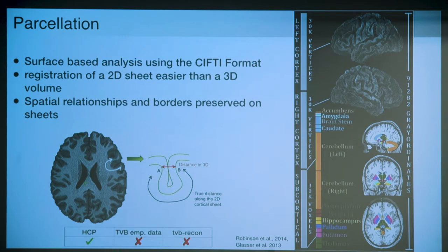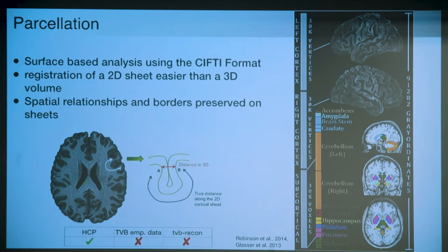This is why the Human Connectome Project does most of their processing on cortical sheets. In 3D, the Euclidean distance between two areas can be very short while the true geodesic distance on the cortical surface is much longer. Representing the cortex as a sheet lets you unravel the true distance between areas, preserving spatial relationships.